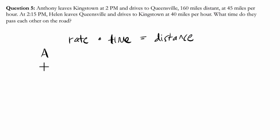So there's a couple of components of this problem. We've got Anthony, he's traveling, and we've got Helen, she's traveling. Anthony leaves at 2 PM and drives to Queensville, 160 miles distant, at 45 miles per hour. So his rate is 45.